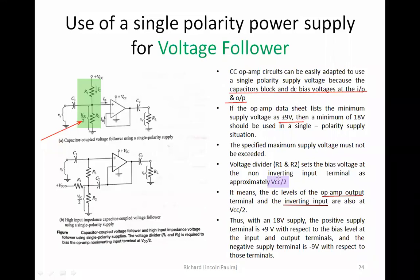Recalling the property of an op-amp: whatever inputs you give at the non-inverting terminal, the same thing will be across the inverting terminal, and the same will appear at the outputs. Keeping this property in mind, we know we are giving 18 volts, so plus 9 comes at the non-inverting input and the same is mirrored. The op-amp output terminal and inverting input will also remain at VCC/2. If I give 20 volts, it's going to be 10 at non-inverting, inverting, and the output because it's a feedback loop.